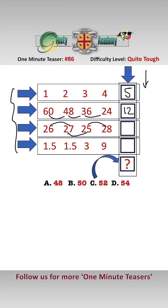Third sequence: 26, 27, 25, 28. We're adding one, taking two, adding three, so we take four. That'll be 24 here.